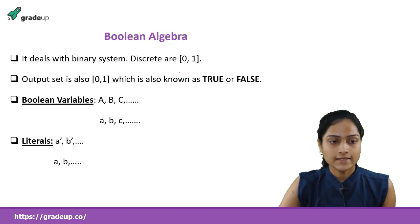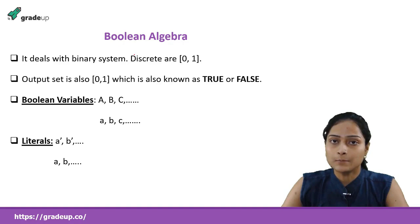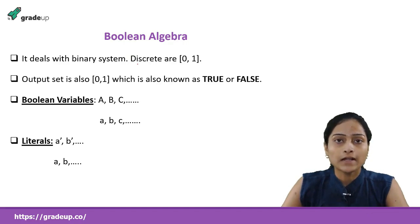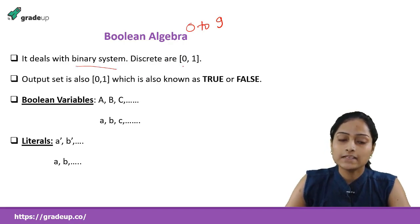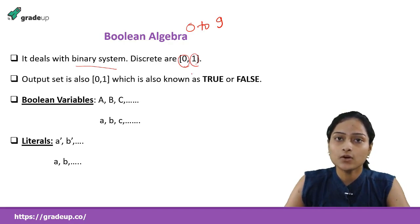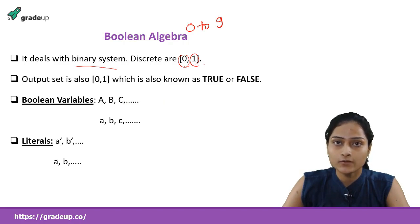The basic foundation for DLD is Boolean algebra. Our logic gates and DLD deal with Boolean algebra. In our decimal number system we have numbers from 0 to 9, but in Boolean algebra we have the binary number system which deals with discrete 0 and 1. The input set is 0 and 1 and the output set is also 0 and 1 — that is true or false.